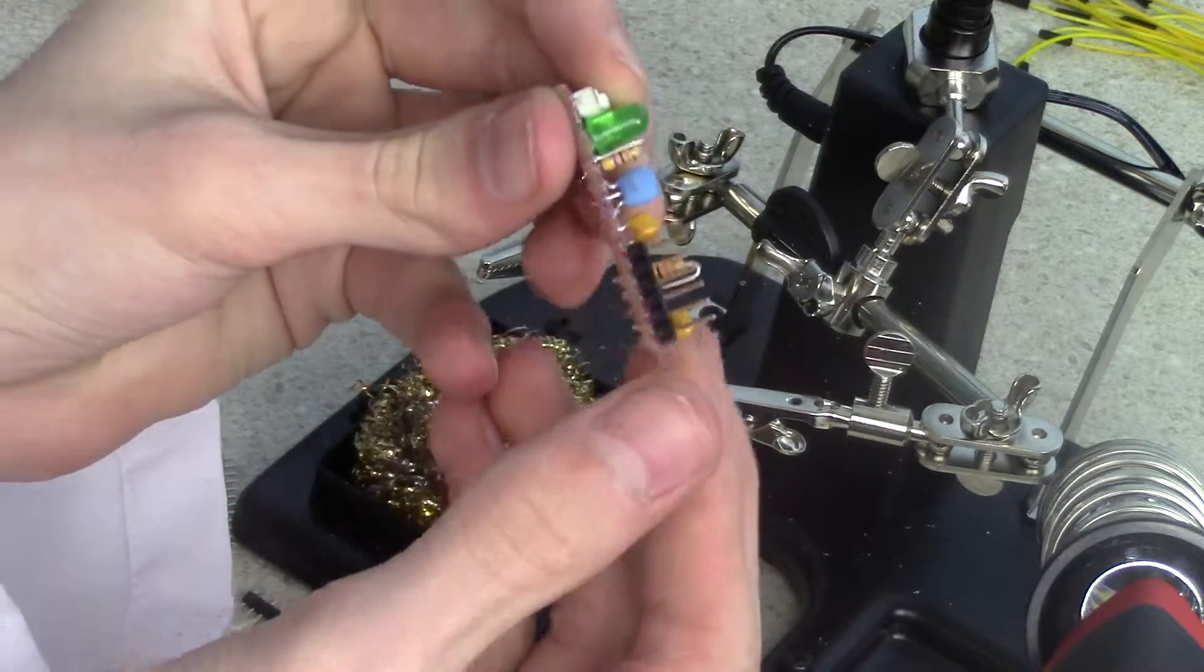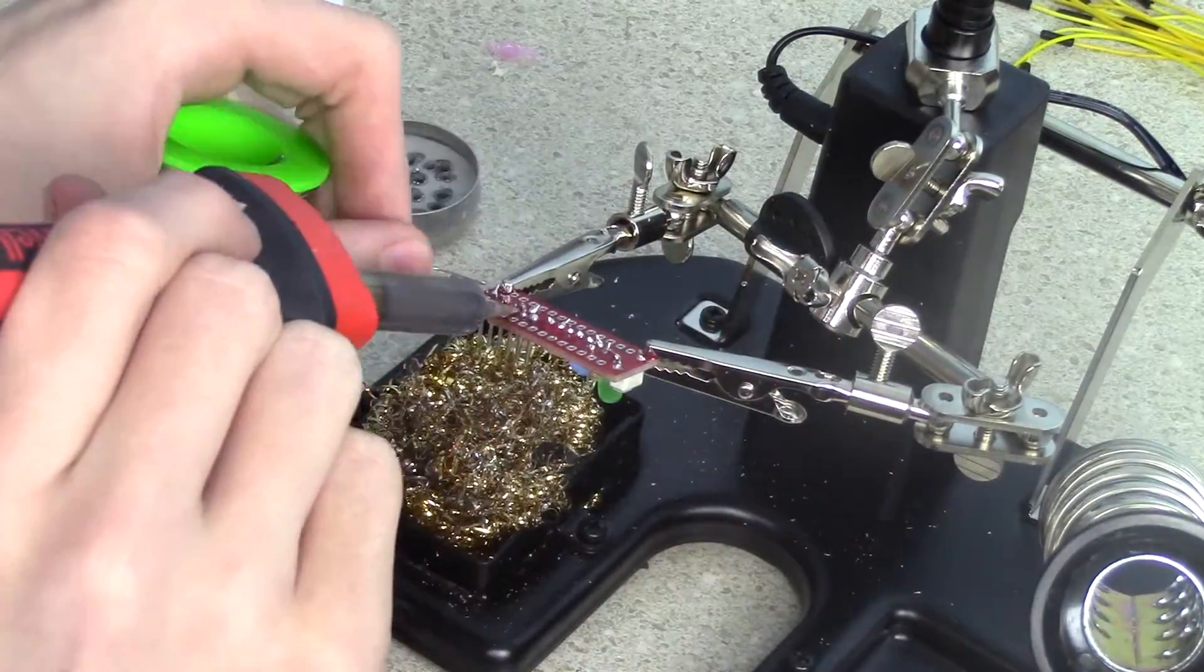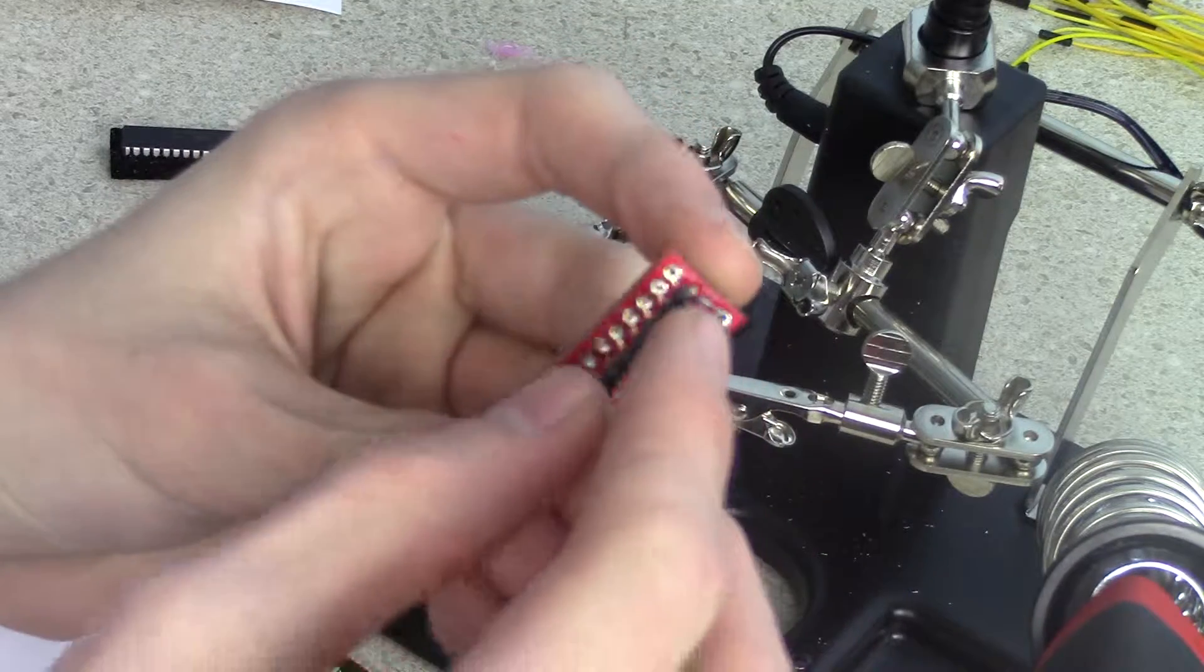Then, place the strip of 6 pins, that's technical name escapes me, into the PRG slot under the rightmost capacitor and resistor, short side first as shown.